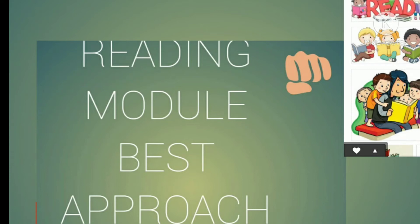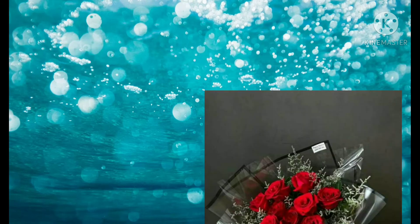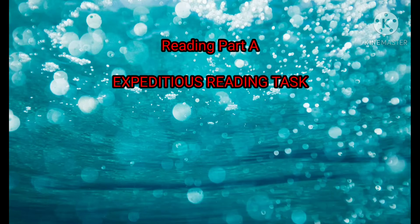Hi friends, in this video I am going to discuss the OET reading subtest in detail. The OET reading subtest consists of 3 parts with a total of 42 questions. You are given 60 minutes to complete all 3 parts: 15 minutes for Part A and 45 minutes for Part B and Part C.